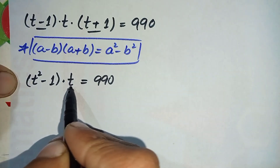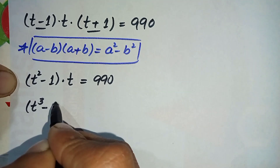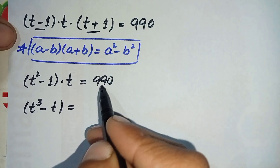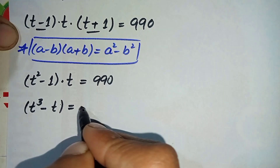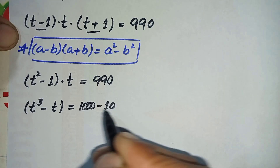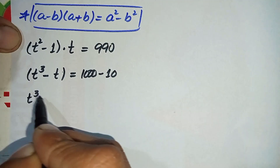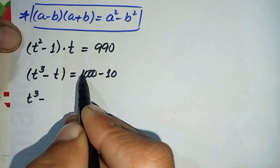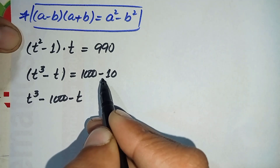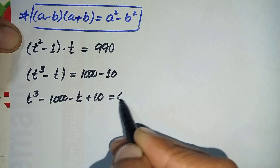Now multiplying t inside gives us t³ - t = 990. I'll rewrite 990 in a helpful form: 990 = 1000 - 10. Shifting these to the left-hand side, we get t³ - 1000 - t + 10 = 0.